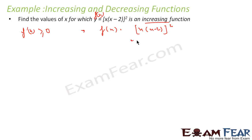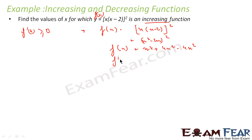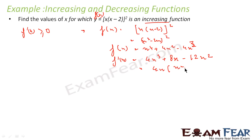So f'(x) is equal to x(x-2)². Let's factorize this: this becomes (x²-2x)², which is x⁴ + 4x² - 4x³. Taking the derivative, f'(x) becomes 4x³ + 8x - 12x², which can be factored as 4x(x²-3x+2).